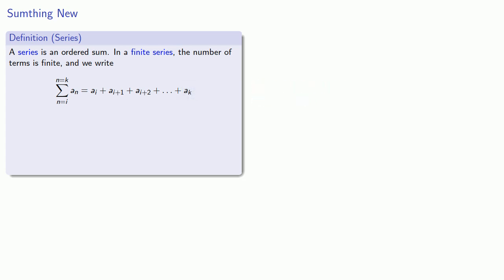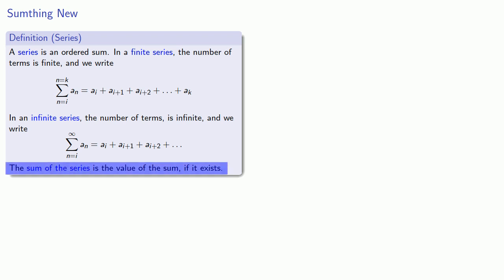The only difference between a finite series and an infinite series is that in an infinite series the number of terms is infinite, and we write the upper limit as infinity. While we can write down the series as a sum, the actual sum of the series is the value of that sum, provided that it exists. One thing we commonly do is omit the indices to refer to a generic series.